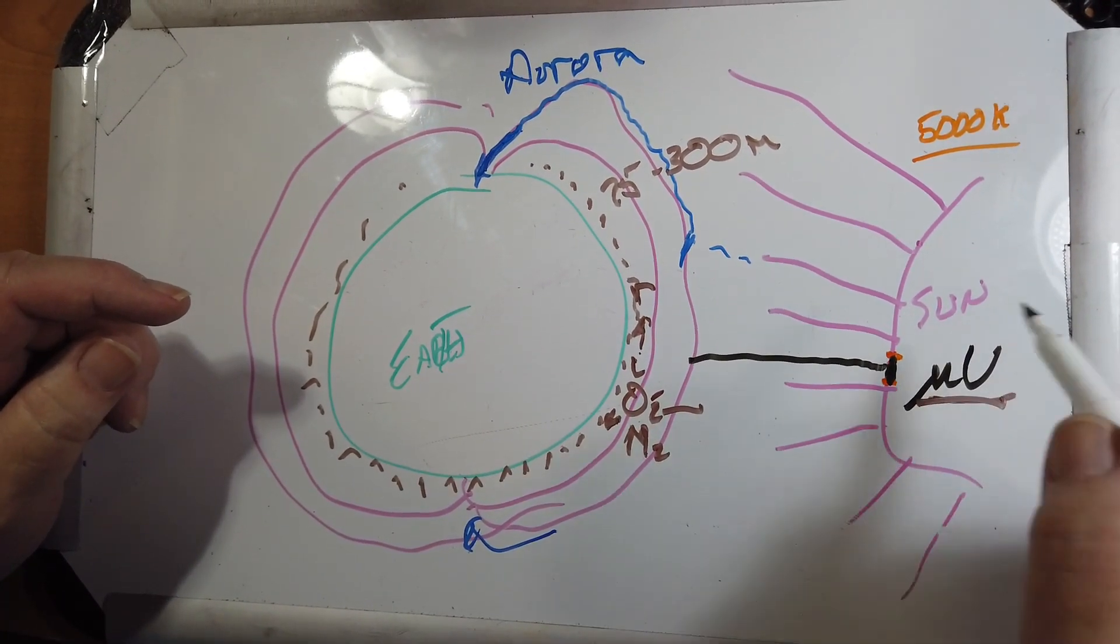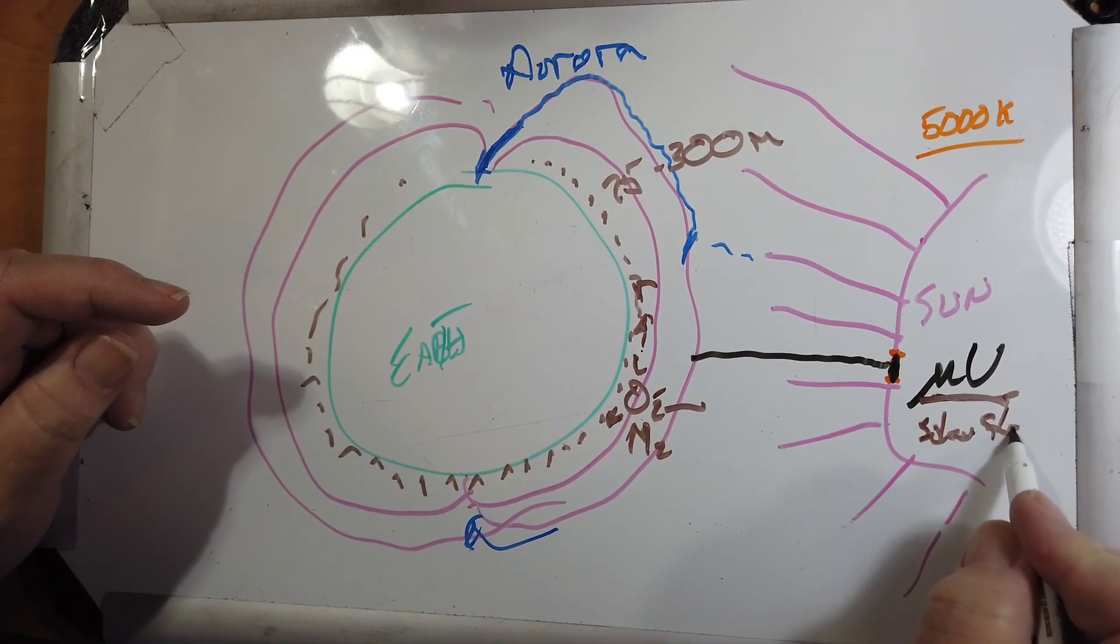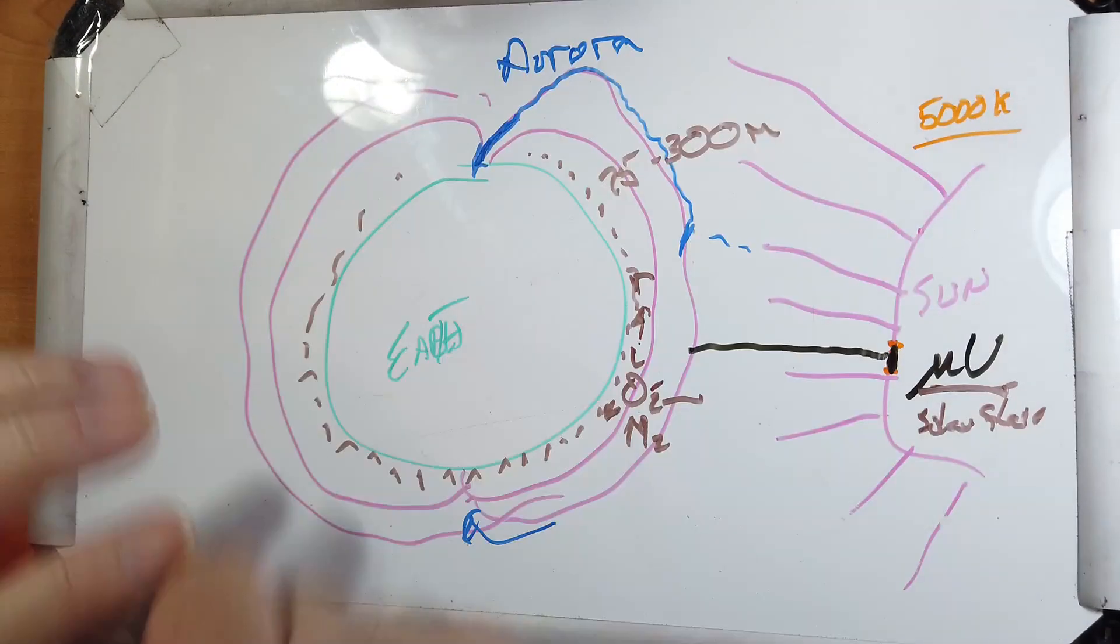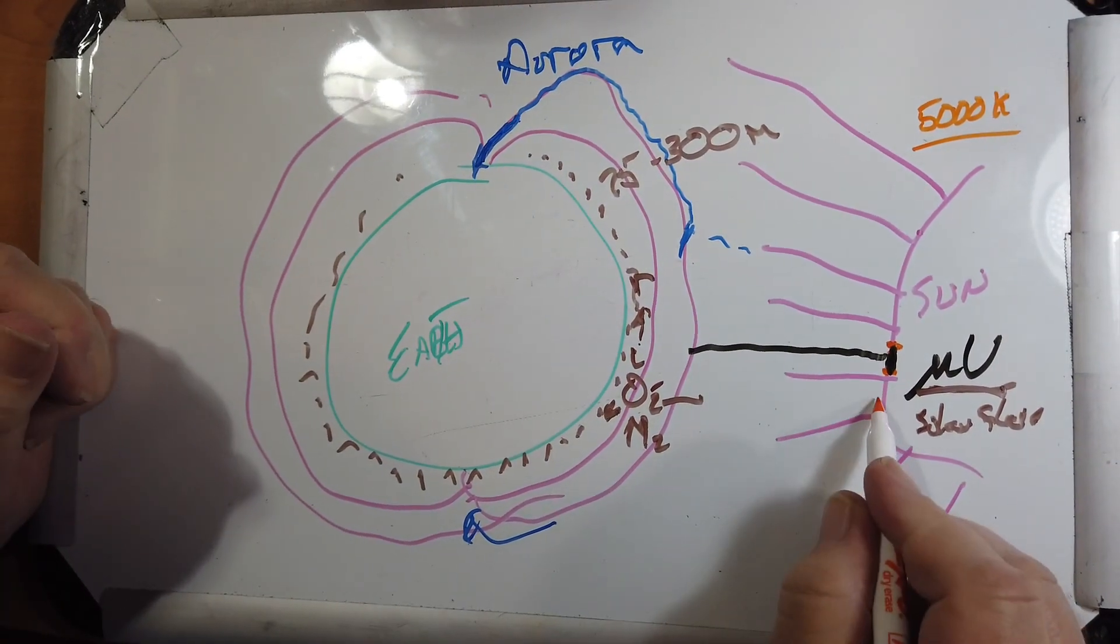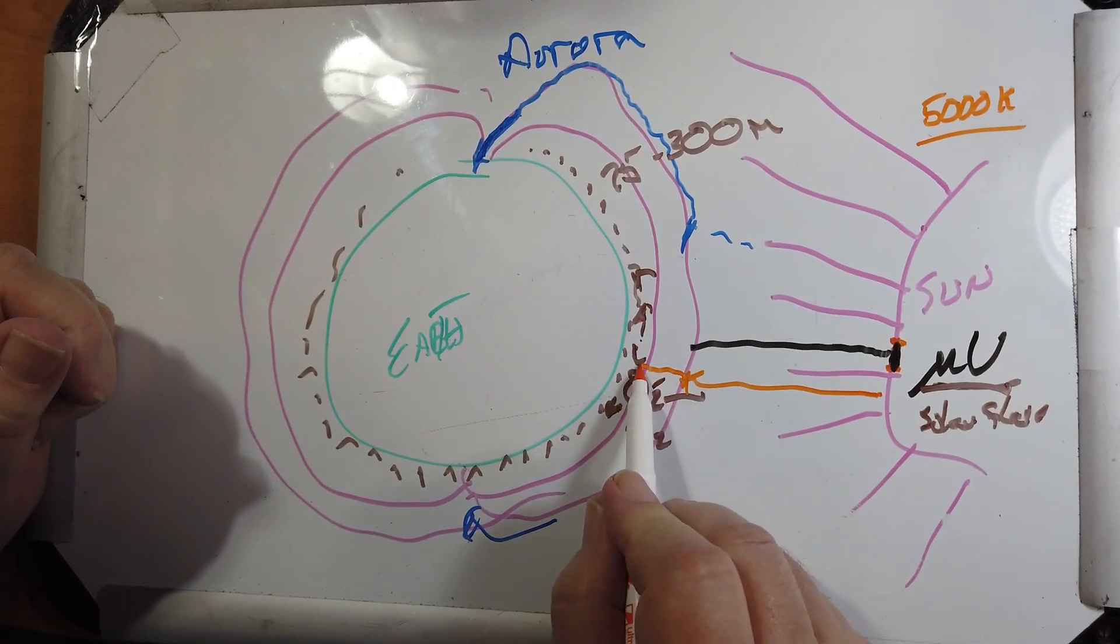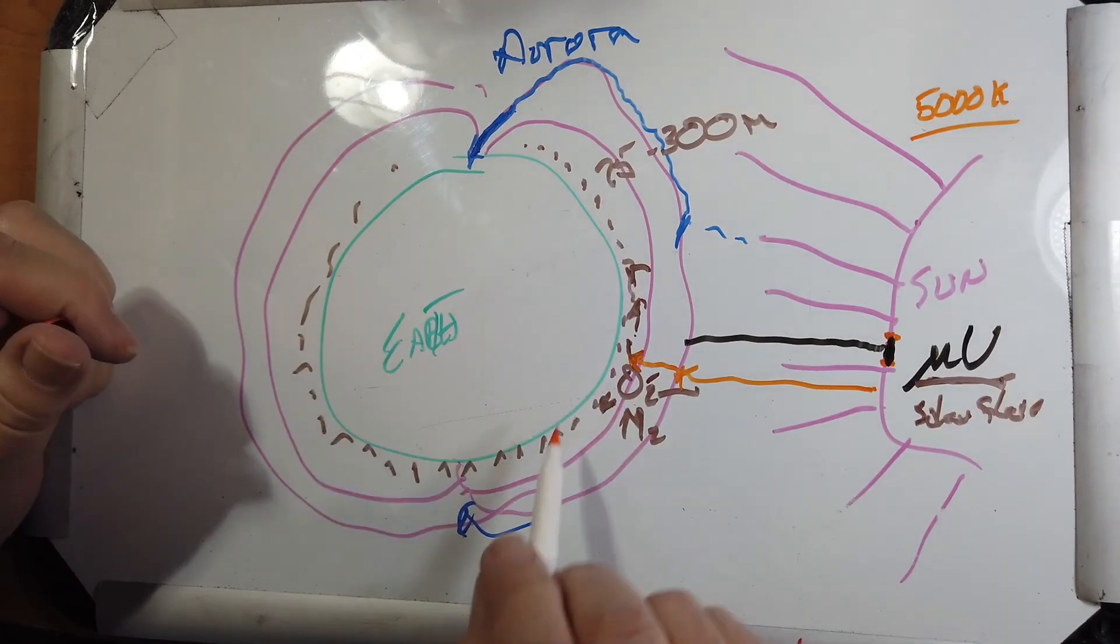If you get a huge solar flare, this can come down. Solar flares actually are particulate matter that come down, hit the magnetosphere, but also come in and hit the ionosphere, and really, really, really charge it up.